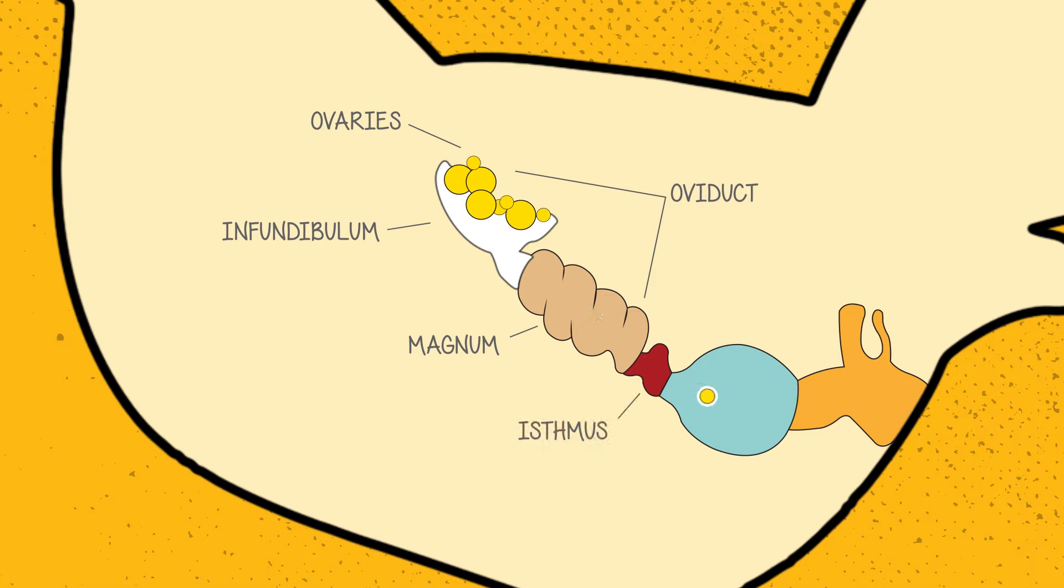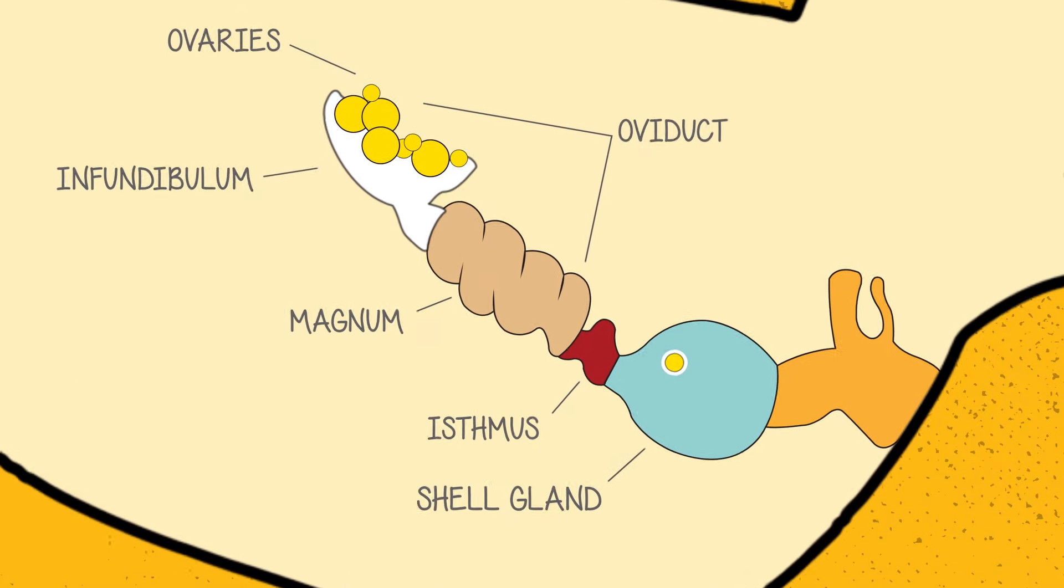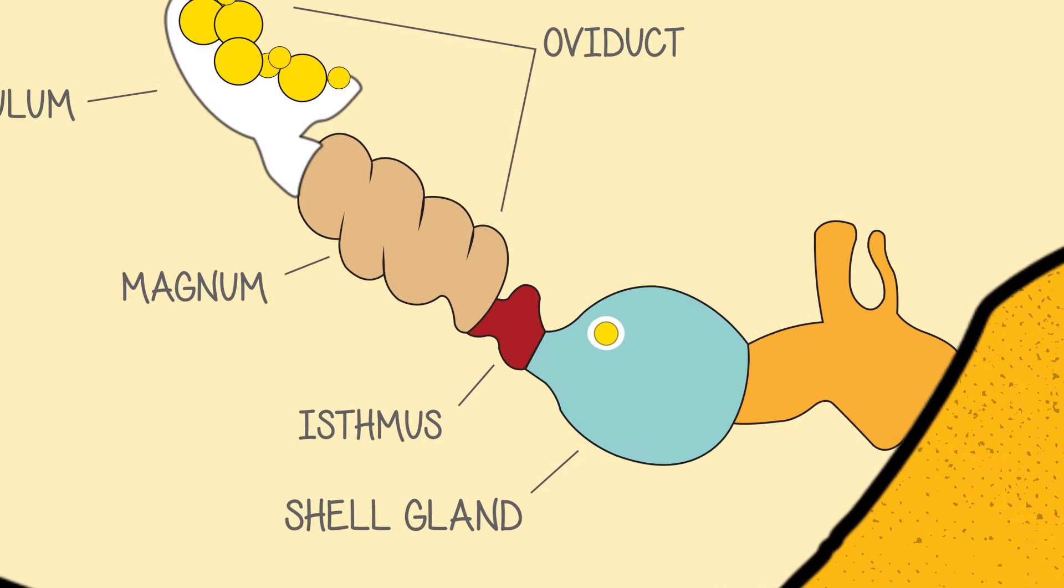Next, in the uterus or shell gland, the eggshell is formed and the egg's color is defined. The majority of the process happens here, roughly about 20 hours.